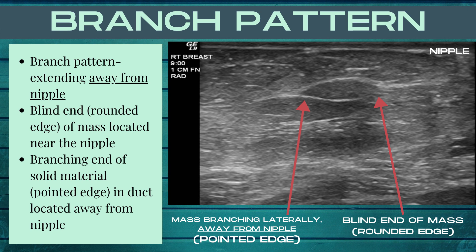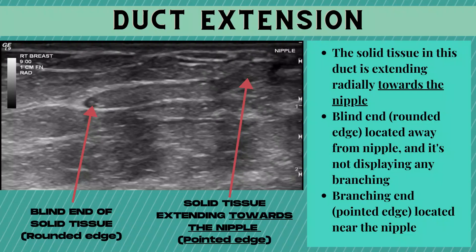This next ultrasound example shows duct extension, where solid tissue in the duct is extending radially towards the nipple. I want to look for my blind end — the rounded edge — and then my branching or pointed edge of the mass within the duct. The branching or pointed edge is located near the nipple, and the blind end — the rounded edge — is located away from the nipple and is not displaying any branching. So this mass is extending towards the nipple instead of away from it.